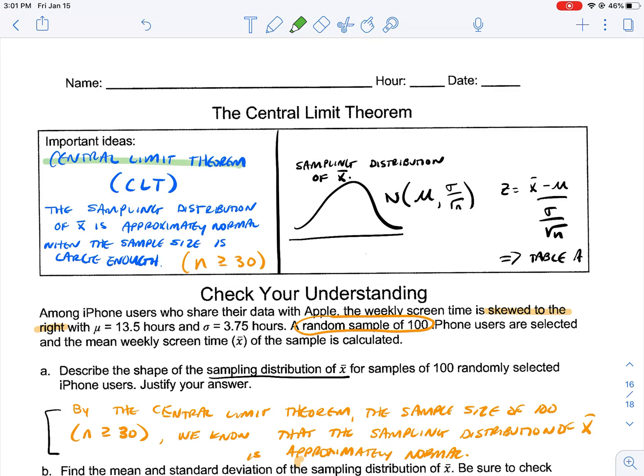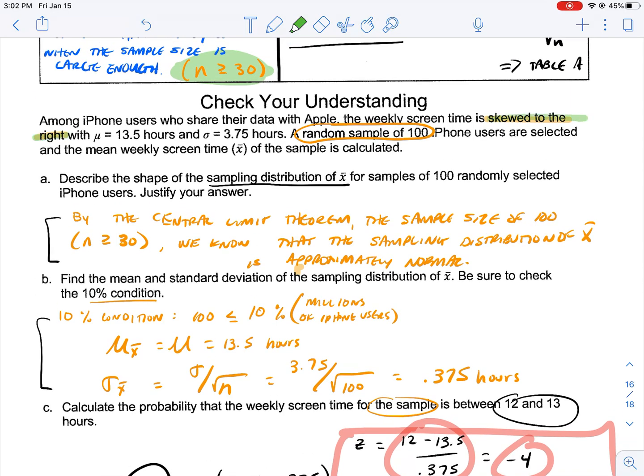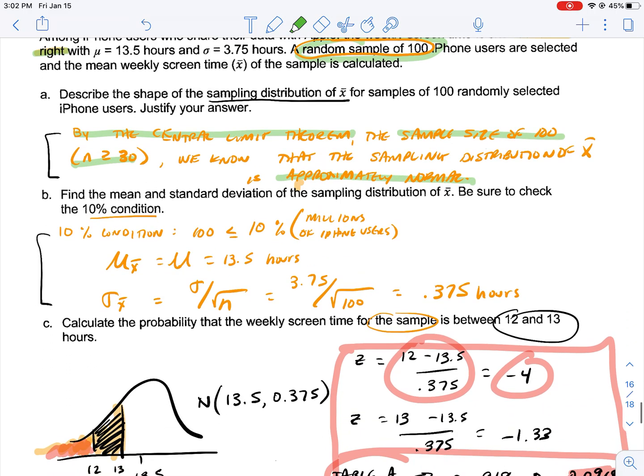So, to review, we talked about the central limit theorem. The central limit theorem says that regardless of what the shape of the population is, if you have a sample size that's large enough, greater than 30, we can call the sampling distribution normal shaped. Then we would have our curve with our mean that matches our population mean, our standard deviation adjusted for sample size. We did an example where we had something that was skewed to the right, but because our sample size was 100, we were able to say by the central limit theorem, the sample distribution was approximately normal.